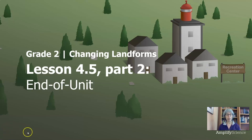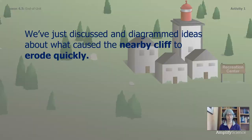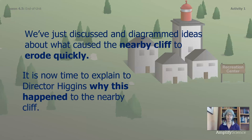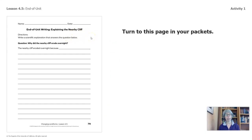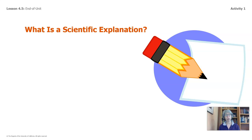Hello, everyone. Thanks for coming back and joining us for the last part of the last lesson in changing landforms. This video is broken up into two activities and we are going to be writing our scientific explanations. We just discussed and diagrammed ideas about what caused the nearby cliff to erode quickly in Part A. It is now time to explain to Director Higgins why this happened to the nearby cliff. Turn to this page in your packets — the end of the unit writing, explaining the nearby cliff.